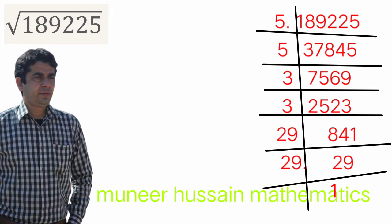Now we shall divide 37845 by 5 again: 5 into 37 is 7 remainder 2, carry 28; 5 into 28 is 5 remainder 3, carry 34; 5 into 34 is 6 remainder 4, carry 45; 5 into 45 is 9. This gives us 7569.